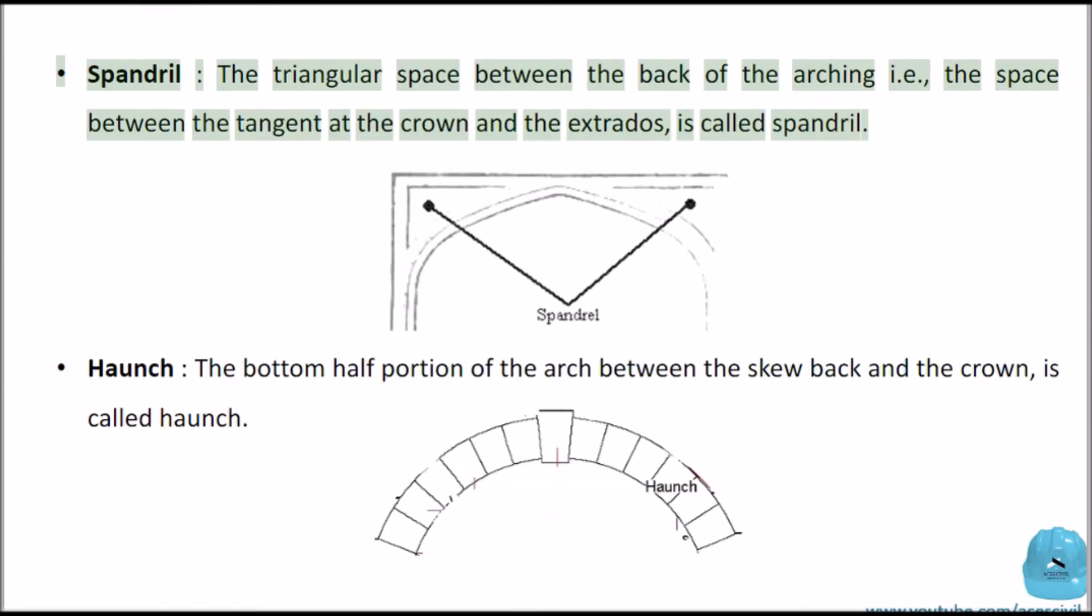Spandril: The triangular space between the back of the arching, the space between the tangent at the crown and the extradose is called spandril.